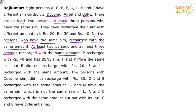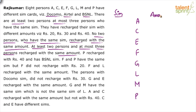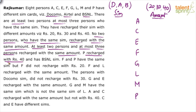Looking at the first clue: P recharged with ₹40 and has a BSNL SIM. F and P have the same SIM, so since P has BSNL, F also has BSNL. But F and P have the same SIM, and since P recharged with ₹40, F cannot recharge with ₹40. It's also given that F did not recharge with ₹20. So out of the three options, ₹40 is ruled out and ₹20 is ruled out — the only choice for F is ₹30. So F recharged with ₹30.